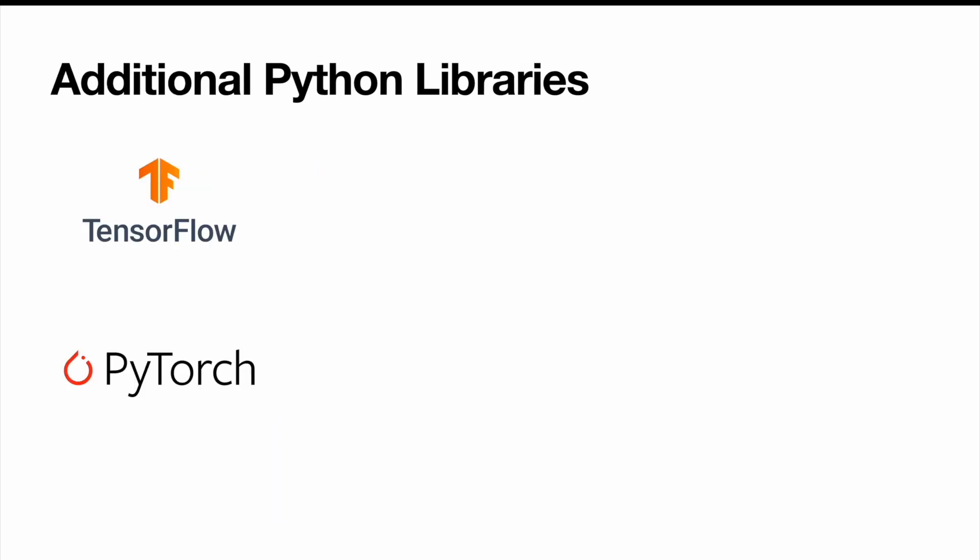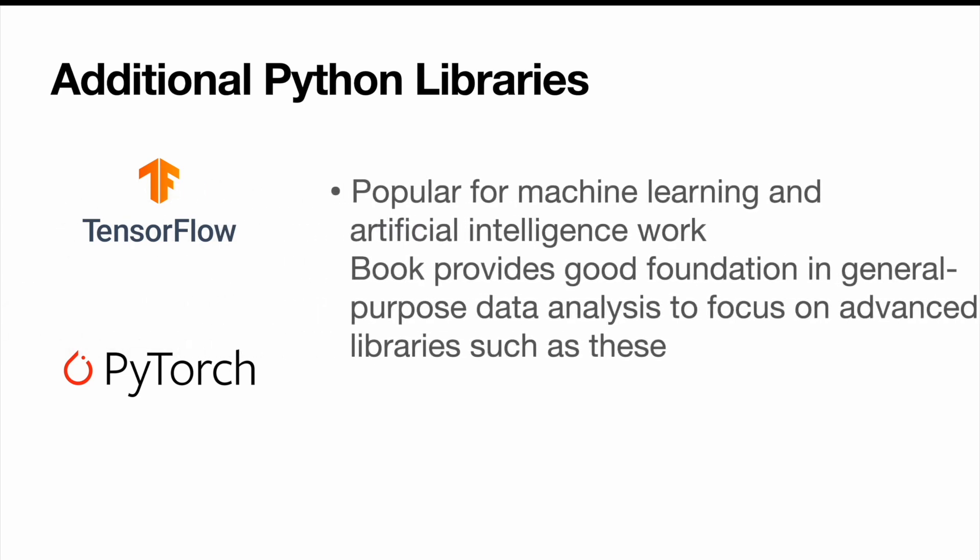There are some additional Python libraries that are quite popular such as TensorFlow and PyTorch. They are outside the scope of this book, but they are quite popular for machine learning and artificial intelligence work. The book provides a really good foundation in general purpose data analysis, and with this foundation in place we are then able to focus on more advanced libraries such as PyTorch and TensorFlow.